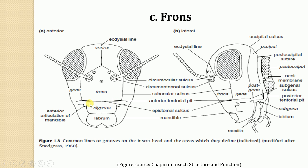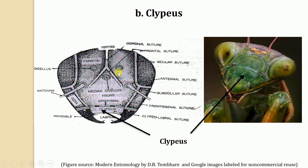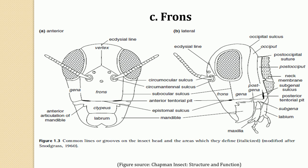The frons extends from the anterior clipeofrontal suture — also referred to as the epistomal suture — to the posterior frontal suture. In orthopteroid insects it may possess a single median ocellus, and in other cases it may bear lateral ocelli also. In some diagrams you can see lateral ocelli as well as median ocelli both lying in the frons, while in other cases the lateral ocelli may occupy the parietal region.